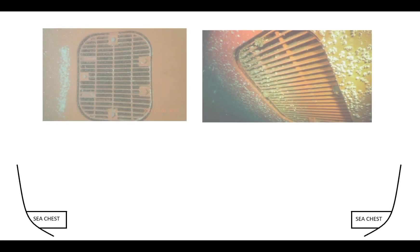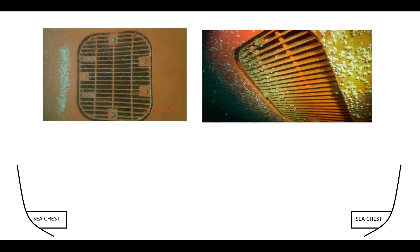Sea chests are mostly found in the engine room, in the space between the side of the ship, which is secured and protected by grids or sea chest gratings to prevent the passage of large objects such as trash, fishnets, and other materials.